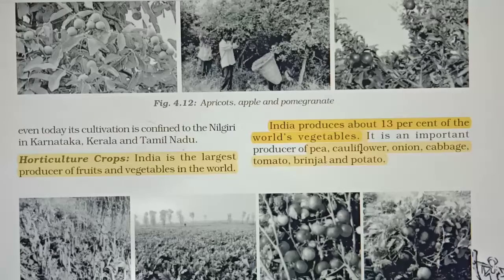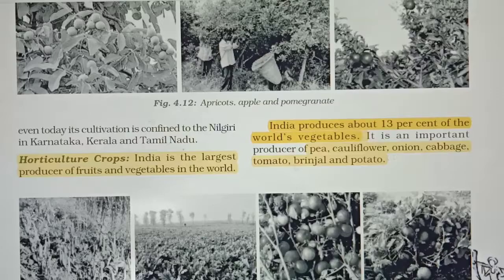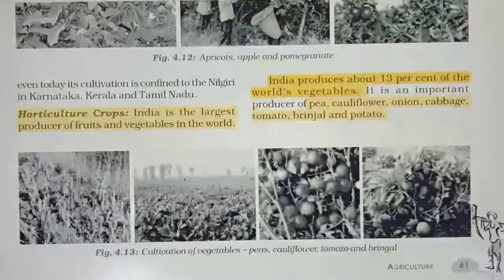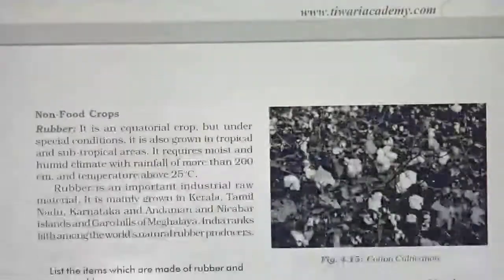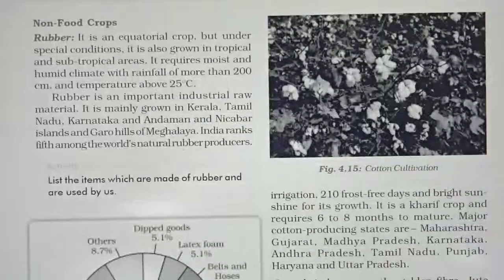The important vegetables of India are peas, cauliflower, onion, cabbage, tomato, brinjal, and potato. So these were the horticulture crops, and now we move to non-food crops.